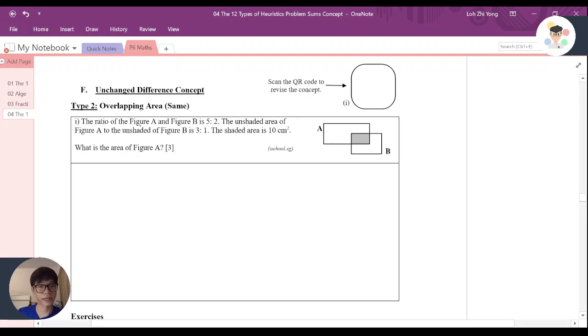Here says that figure A and figure B is 5 to 2. So I know A, B is 5 to 2. Now, here says that the unshaded area of A and unshaded figure B is 3 to 1. It's 3 to 1.